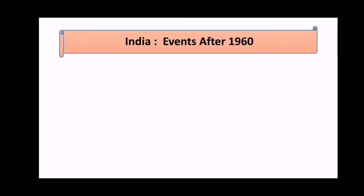Hello, dear students. Today we are going to learn the second chapter of history. As in the previous chapter, we collected information about sources of history. In this textbook, you are not going to find the history of ancient, medieval, or modern periods as you read in seventh or eighth standard. Here we are going to learn the history of our own country, and the period covered in this book is 1960 to 2000. The name of the second chapter is 'Events After 1960.'